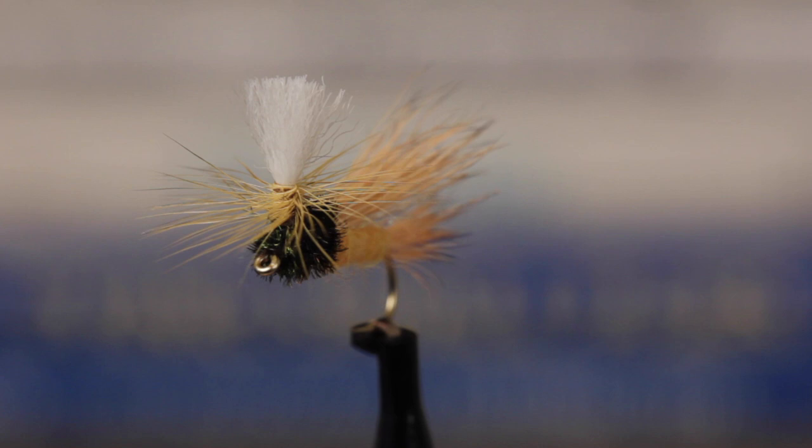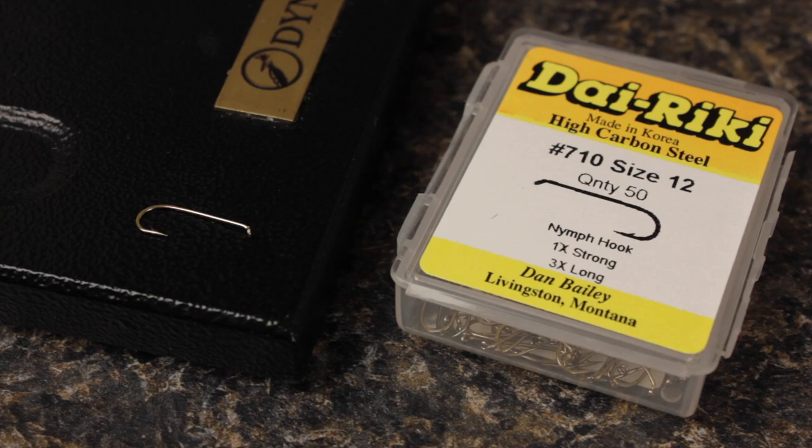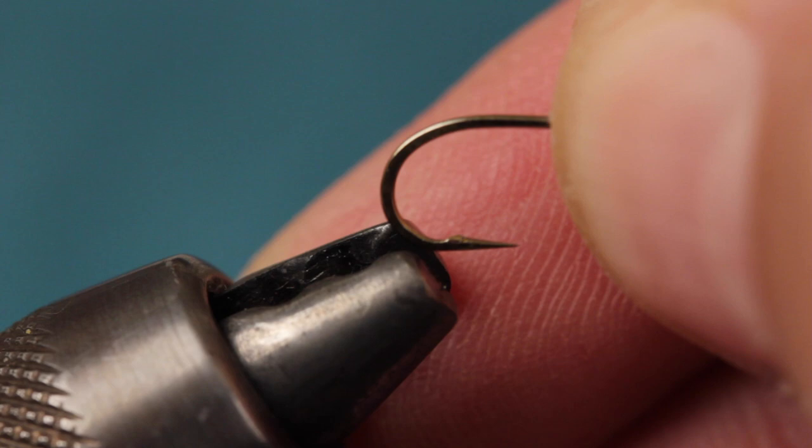The Bugmeister, developed by John Perry of Montana, is probably best described as a universal attractor pattern. It can be tied in a wide variety of colors. Here, I'm going with a kind of golden theme. For a hook, I'm using a Direki No. 710 in size 12. 3x long seems to make for a well-proportioned fly.